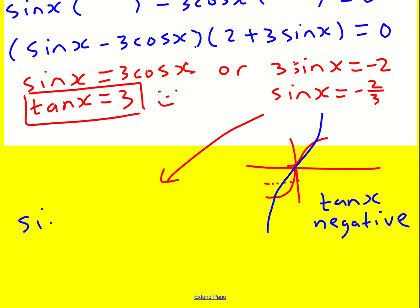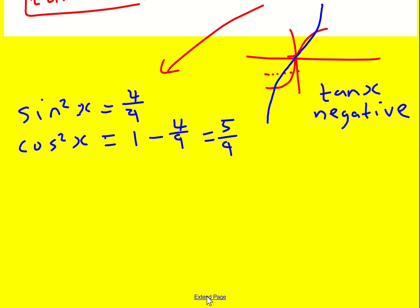So, next thing, I'm going to actually work out what sine squared x is. This is method one. Sine squared x is going to equal 4 over 9. And from that, I can get cos squared x, because cos squared x is then going to be 1 minus sin squared x. So it's 1 minus 4 over 9. And it's going to be 5 over 9. And therefore tan squared x is going to be sin squared x over cos squared x. It's 4 over 9, all over 5 over 9, which is 4 over 9 times 9 over 5. These cancel, and I'm left with 4 over 5.